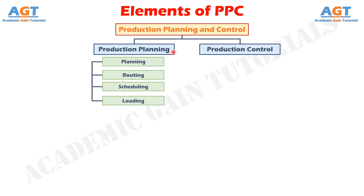regard to production to be undertaken in due course. The planning department prepares various charts, manuals, and production budgets on the basis of information received from management. These plans, charts, and production budgets are given practical shape by carrying out various elements under production control.